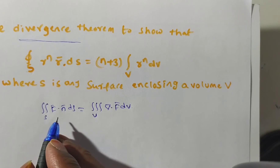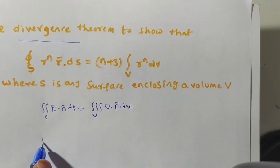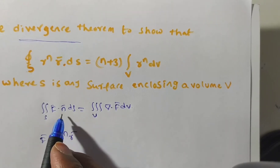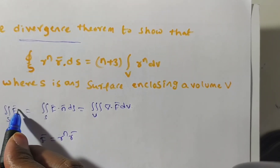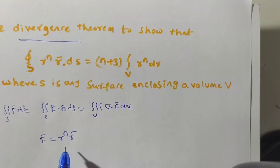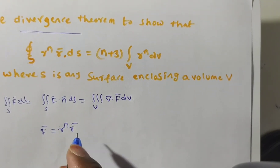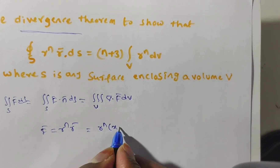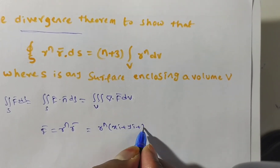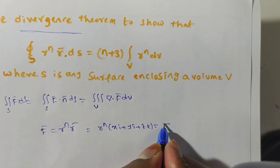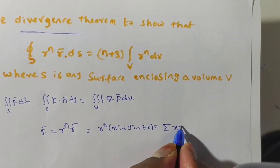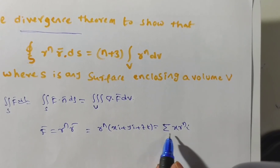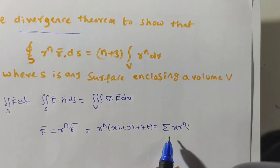So what is f̄ here? f̄ is nothing but r^n · r̄. Sometimes you will see this given as integral over S of f̄ dS — both are the same. In this case, r^n · r̄ can be written as r^n into (x·i + y·j + z·k), or equivalently as summation of x · r^n · î.